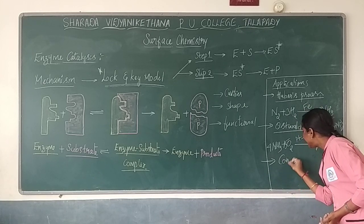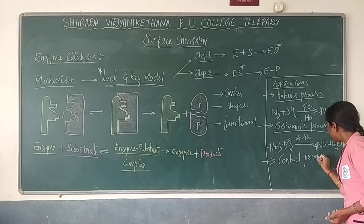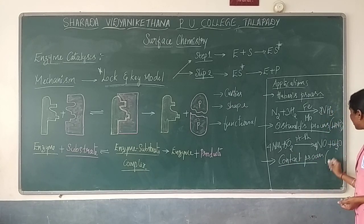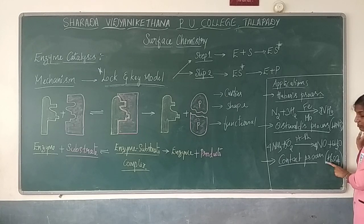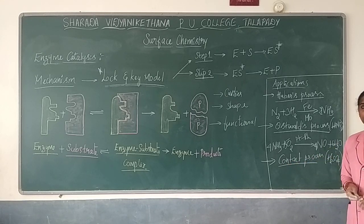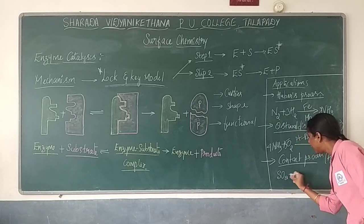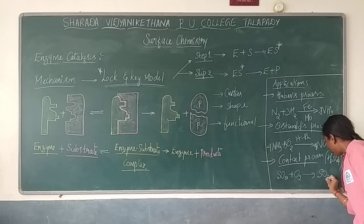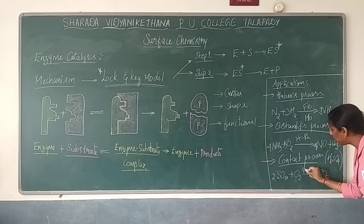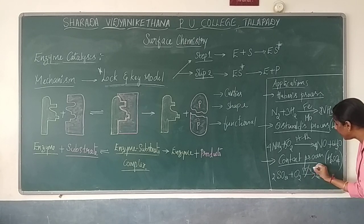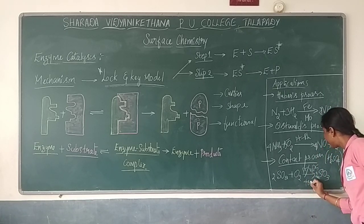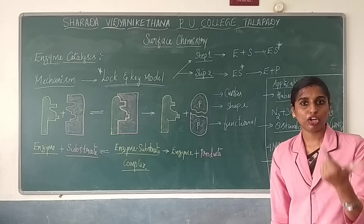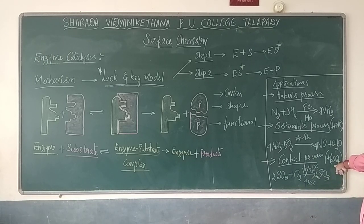The next example is the Contact process. The Contact process involves the production of sulfuric acid. Sulfur dioxide undergoes oxidation to get sulfur trioxide. This will be done using either platinum as a catalyst or V2O5, which is vanadium pentoxide, with a certain temperature of 480 degrees Celsius. With the platinum or vanadium catalyst you get production of sulfuric acid, but H2SO4 is not formed directly. Again, this is a three-step procedure.